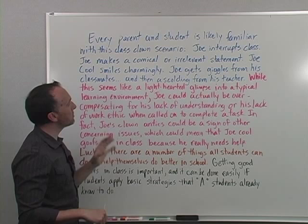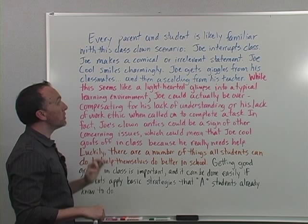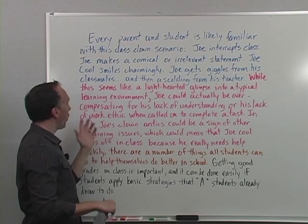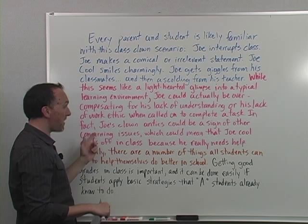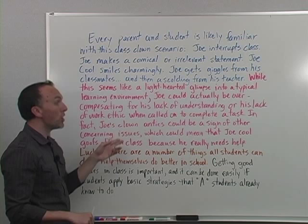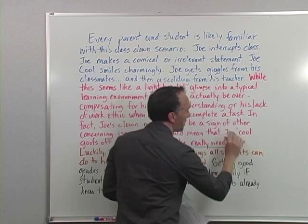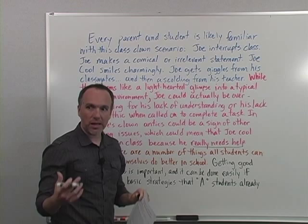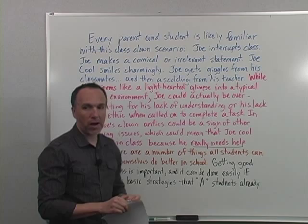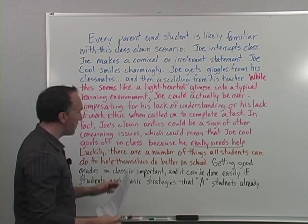Here's how I do that transition: 'While this seems like a lighthearted glimpse into a typical learning environment, Joe could actually be overcompensating for his lack of understanding or his lack of work ethic when called on to complete a task. In fact, Joe's clown antics could be a sign of other concerning issues, which could mean that Joe Cool goofs off in class because he really needs help.' Notice that 'really needs help' is the catalyst that propels me toward the topic of getting good grades — that's specifically what this whole essay is about: how to get good grades.